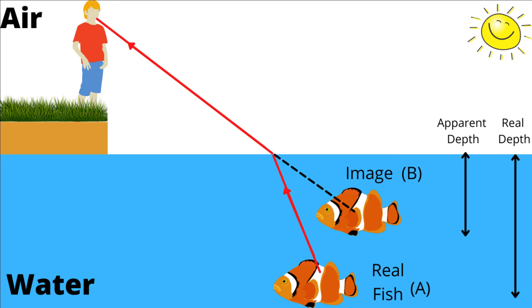Fish A at the bottom is the real fish. The light from the sun hits the fish, then travels from the bottom of the pond, through the water, then through the air, into the boy's eye — you can see this by the red line. Since light travels more slowly in water than in air, as the light enters the air it bends away from the normal. Therefore, fish A has been bent away from its true position and the false image of fish B appears to be closer to the surface.